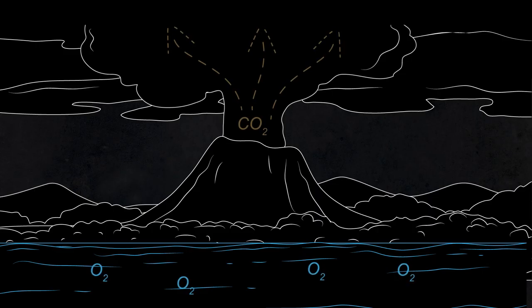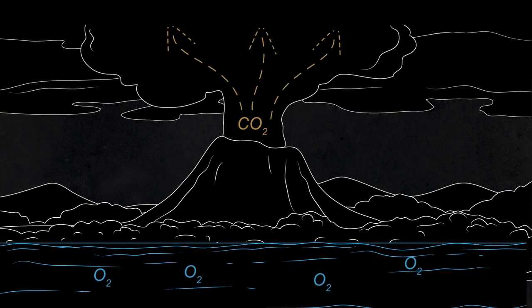One of the biggest questions surrounding mass extinctions is what could possibly cause such widespread death and devastation. There are a number of potential causes, including extraterrestrial meteorite impacts and gamma ray bursts from nearby supernovas. However, the most compelling causes come from much closer to home and are associated with rapid changes to global climate. The most severe mass extinctions are associated with massive volcanic eruptions called large igneous provinces, which erupted across entire continents for tens of thousands of years, emitting greenhouse gases into the atmosphere.